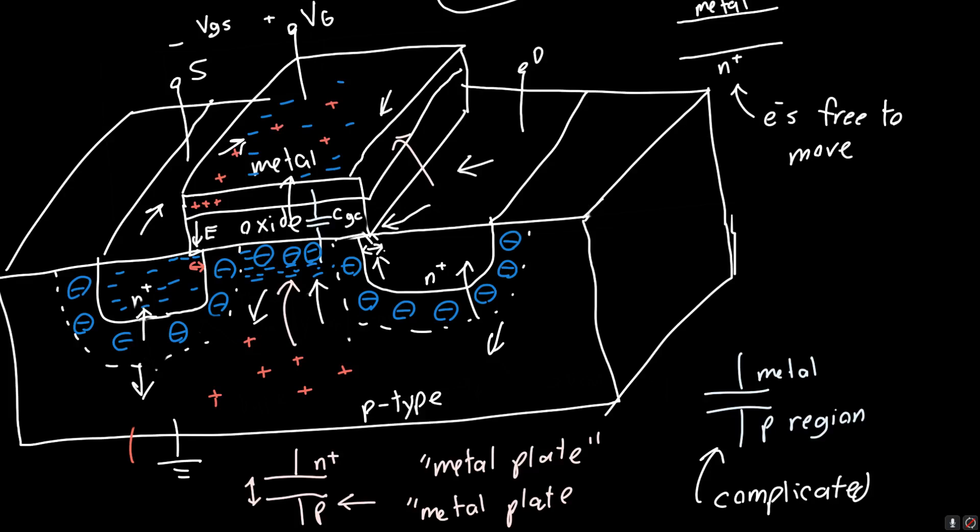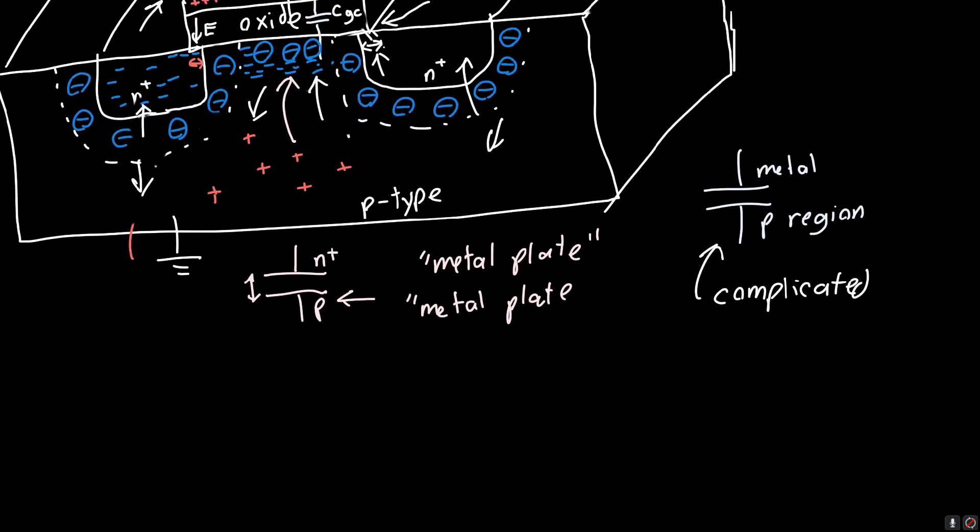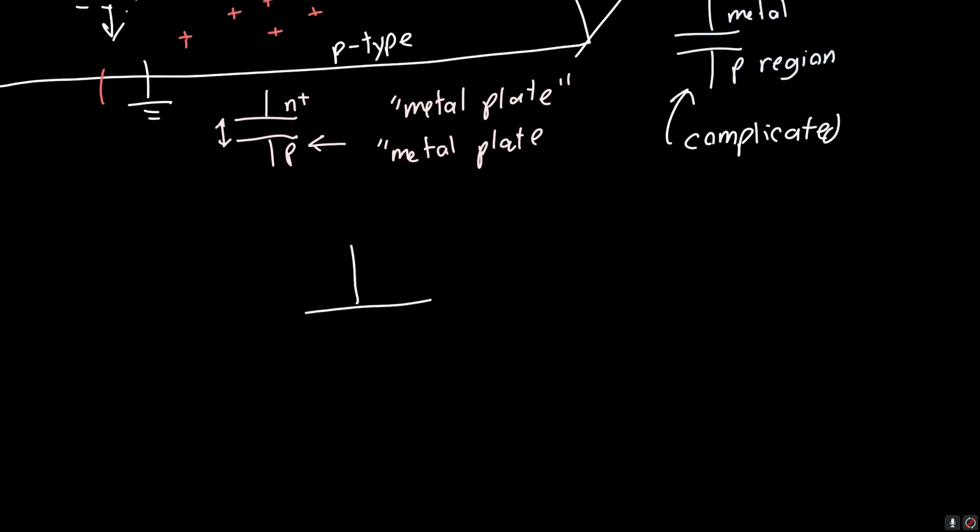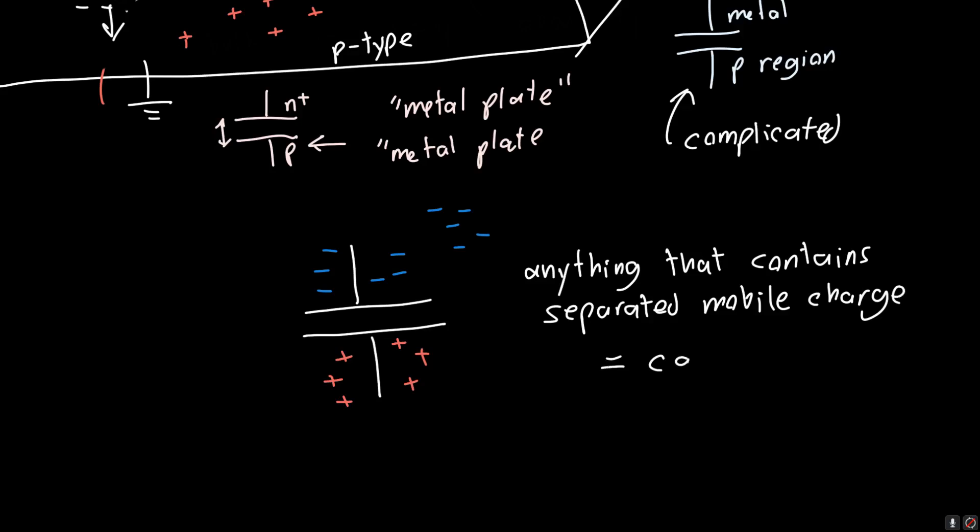And the picture might look really complicated right now. But so long as you understand the basic idea behind a capacitor, that a capacitor is just formed when you have a separation of mobile charge. So you can have negative charges, as in the case of an n-type region. You can have positive charges, as in the case of a p-type region. You can have a metal, which generally has electrons that can move around. You can have anything that contains mobile charge.